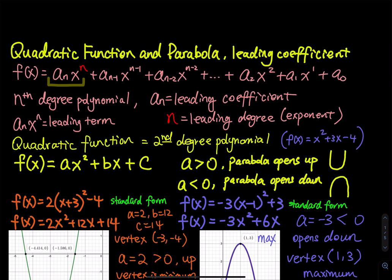Introducing quadratic function and parabola. Let's talk about an n-degree polynomial. We have f of x equals to a_n x to the nth power, plus a_(n-1) x to the n minus 1, plus a_(n-2) x to the n minus 2, and we keep going until we reach the second power, first power, and zero power. X to the zero power equals 1, so the last term, a_0, is just a constant. This is an nth degree polynomial.